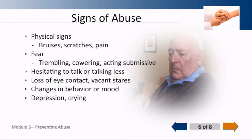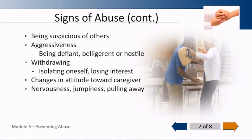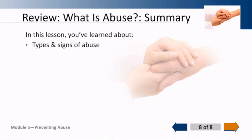The physical signs would be bruises, scratches, pain — we may not be able to see the injury but the elder has pain. Fear, trembling, cowering, or acting submissive. Hesitating to talk or talking less, loss of eye contact, vacant stares, changes in mood or behavior. Depression and crying, being suspicious of other people, aggressiveness, being defiant, belligerent, or hostile — you may actually be producing some behaviors because of your behavior. Withdrawing — any sort of changes in attitude toward a particular caregiver. And then nervousness, jumpiness, or pulling away.